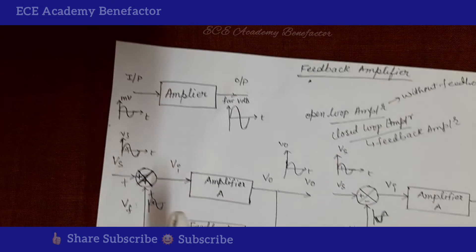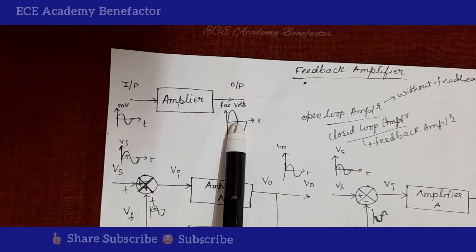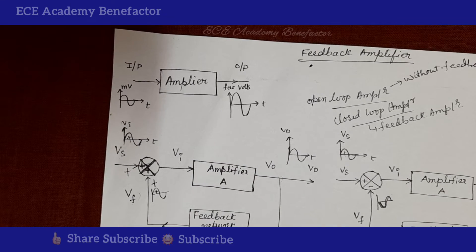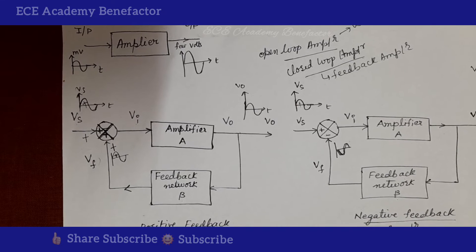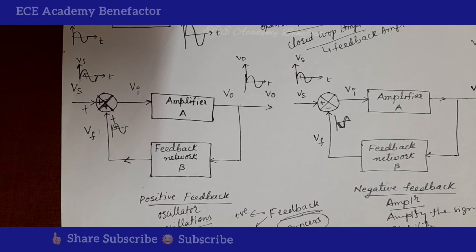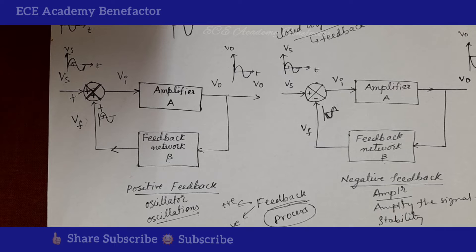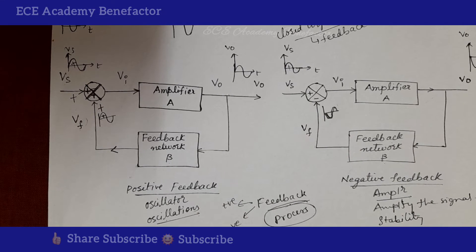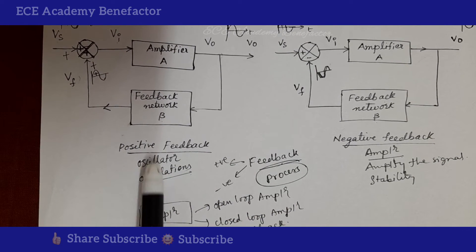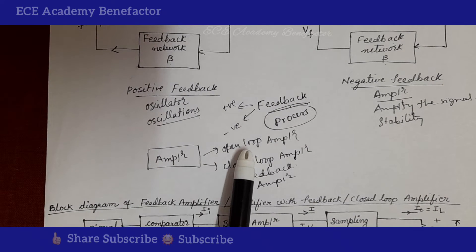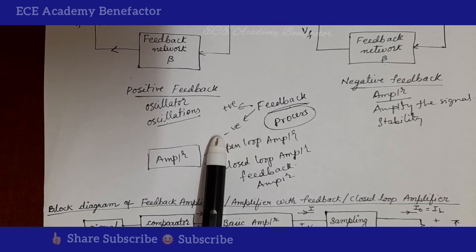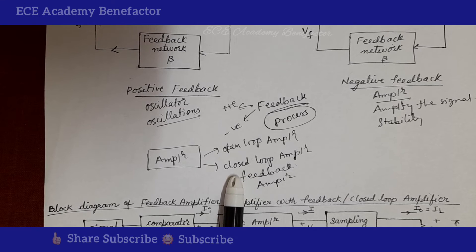To summarize: an amplifier is a device for increasing the strength of a weak signal to a strong signal. Feedback is a process of taking a part of the output and giving it back to the input. Positive feedback is known as regenerative feedback, and negative feedback is known as degenerative feedback. Positive feedback is used in oscillators; negative feedback is used in amplifiers. Open loop means an amplifier without feedback; closed loop means an amplifier with feedback.